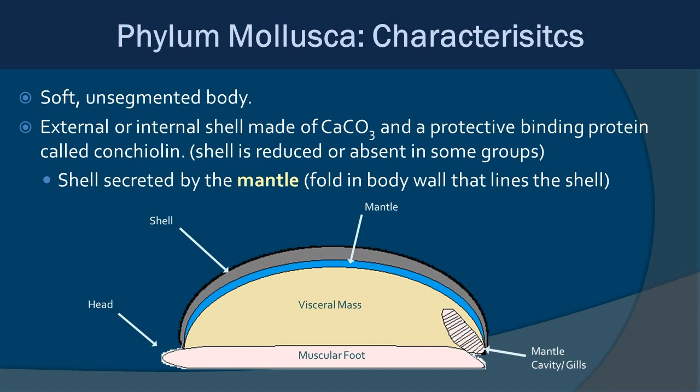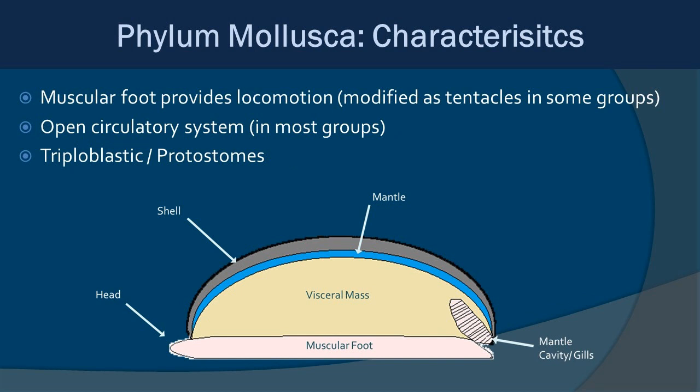The shell, when they do have it, is made out of a combination of calcium carbonate and a protective binding protein called conklin. The shell is secreted by a tissue layer called the mantle, and that shell continues to grow throughout the mollusc's life. On the very bottom of the diagram is a pink layer which is the muscular foot — that provides locomotion, how conchs and snails move around. In other forms of molluscs, that muscular foot might be turned into tentacles. Between the mantle and the muscular foot you have the visceral mass, which is where you find most of the organs.